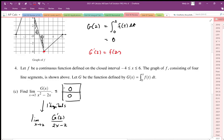So when I evaluate this limit, this is going to be negative 4 over, when I substitute 2 in, I end up with 2 times 2 minus 2. So I end up with negative 4 over 4 minus 2. So the limit is equal to negative 2.